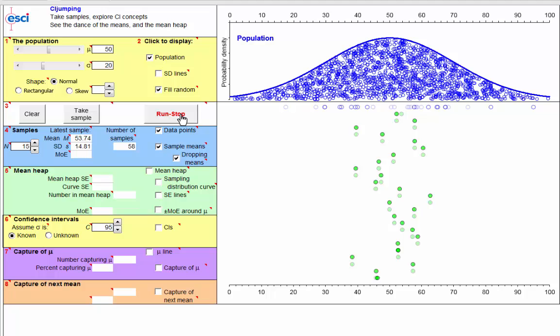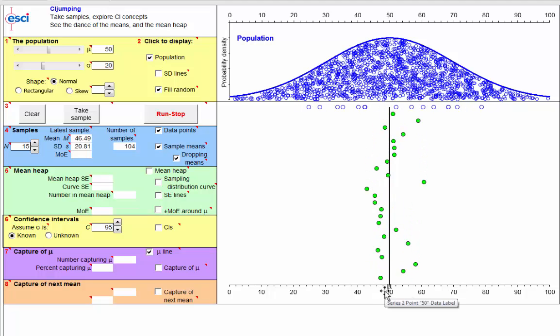Now, here's a question. These are for samples of size 15. Suppose we took samples of size 60. Would the dance be wider or narrower? Would the means of samples of size 60 be closer to the population mean of mu, or further away? Pause the video and think about that for a tick.